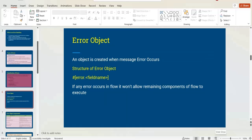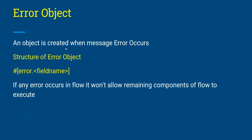Whenever an error occurs in MuleSoft, an error object is created. In general, a Mule message has two parts: attributes and payload — that is for the success case. If you experience any exception in your flow, a new error object is created which holds all the error-related details. It has several fields, and using the specific field name you will get the specific error detail. In a successful scenario you cannot see this error object.